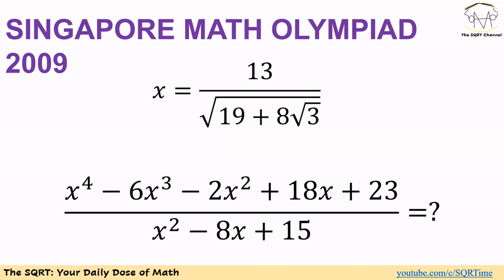Hello everyone, welcome to the Square T channel. In this video we are going to talk about a problem from the Singapore Math Olympiad. In this problem we have x equal to 13 over the square root of 19 plus 8 radical 3.